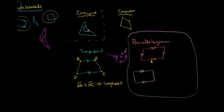The parallelogram tells us that opposite sides are parallel. And if we know that all four angles are 90 degrees — we've shown in previous videos that the sum of the interior angles of any quadrilateral is 360 degrees — then we would call this a rectangle.